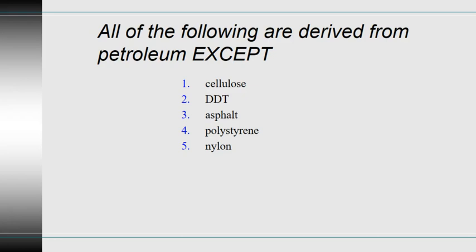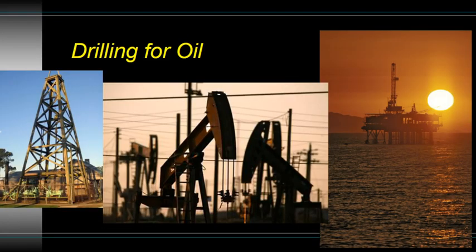It's amazing that four of these things are actually petroleum derivatives. The exception — not a petroleum derivative — is cellulose, which is a plant product and one of the fibers in plants. DDT, asphalt, polystyrene, and nylon are all petroleum derivatives. DDT is a pesticide, asphalt is the black paving material, and polystyrene and nylon are both plastics — think styrofoam cups and windbreaker fabrics.